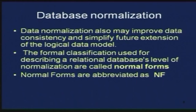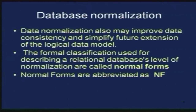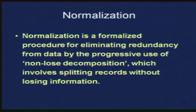The formal classification used for describing a relational database's level of normalization is called the normal form. Normal forms are abbreviated as NF. Normalization is a formalized procedure for eliminating redundancy from data by the progressive use of non-lossy decomposition — splitting records or tables without losing information. If you do the splitting without losing information, it is called non-lossy decomposition.